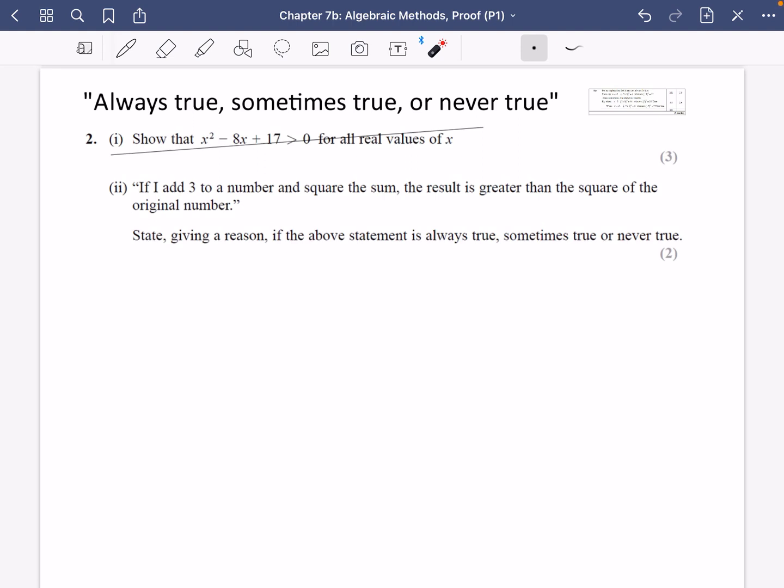OK, so I'm going to do a couple of exam questions, specifically where they use this phrase 'always true, sometimes true, or never true'. Now, we could actually do part one of this question, it's just a complete the square bit, but I want to look at this part two here. It says if I add three to a number and square the sum, the result is greater than the square of the original number. State, giving a reason, if the above statement is always true, sometimes true, or never true.